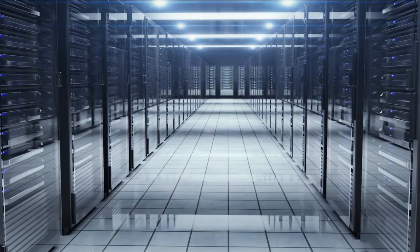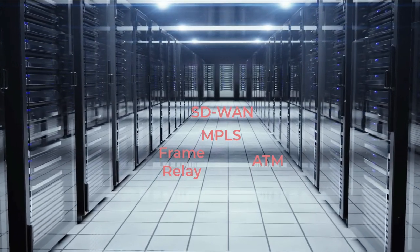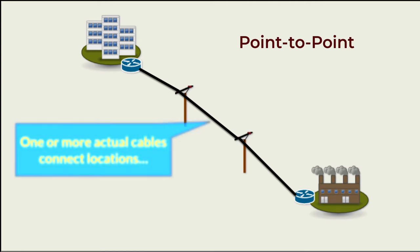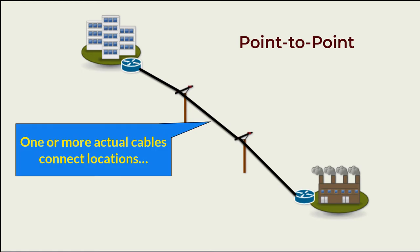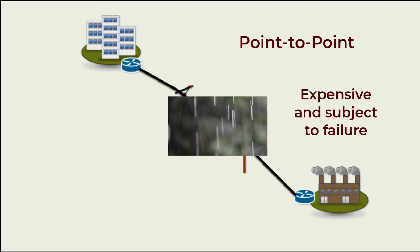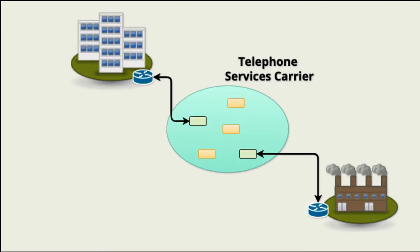Various approaches to WAN communications exist. In this video, we look at four technologies: Frame Relay, ATM, MPLS, and SD-WAN. Frame Relay, a technology that organizations are quickly moving away from, is designed to connect local area networks, forming a wide area network. It replaces an earlier approach of point-to-point connections using full or fractional T1 or T3 connections. Point-to-point connections are expensive and subject to failure. A connection between a plant and the main data center via a single point-to-point T1 line could fail due to environmental factors, resulting in an interruption in operations. Frame Relay reduces cost and introduces failover possibilities.